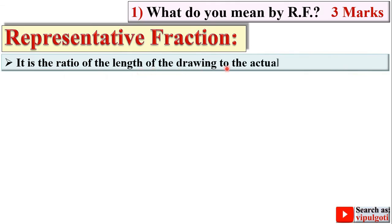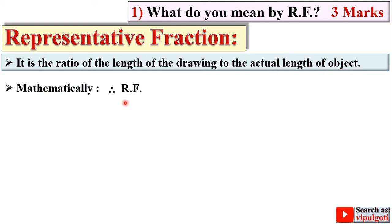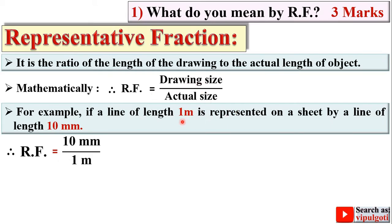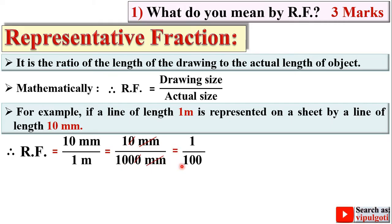RF means representative fraction. It is the ratio of the length of the drawing to the actual length of the object. Mathematically, RF equals drawing size divided by actual size. For example, if a line of actual length 1 meter is represented on a sheet by a line of 10 mm, then RF equals 10 mm divided by 1 meter. Converting 1 meter to 1000 mm and cancelling units gives RF equals 1 upon 100, or 1 is to 100.